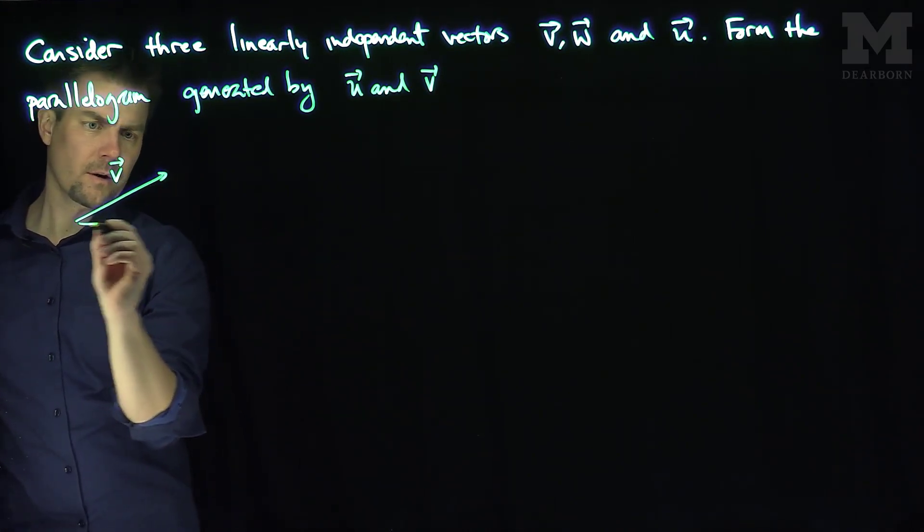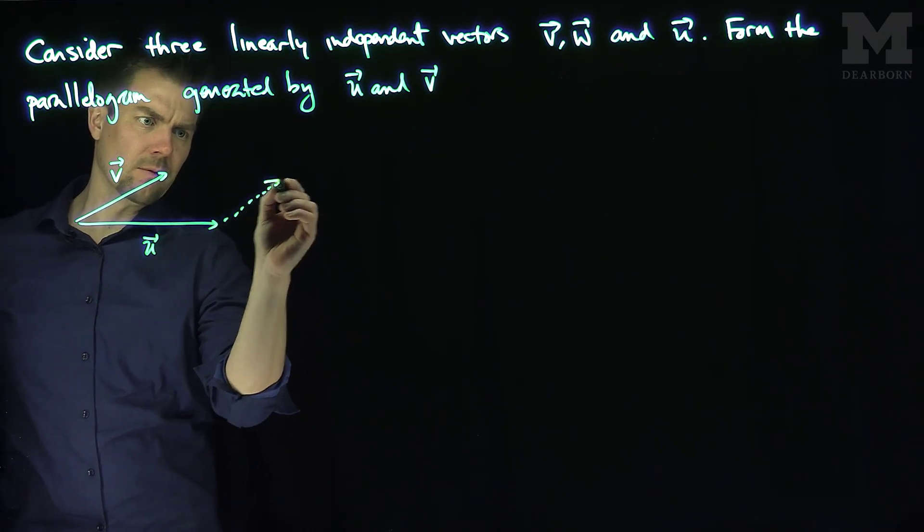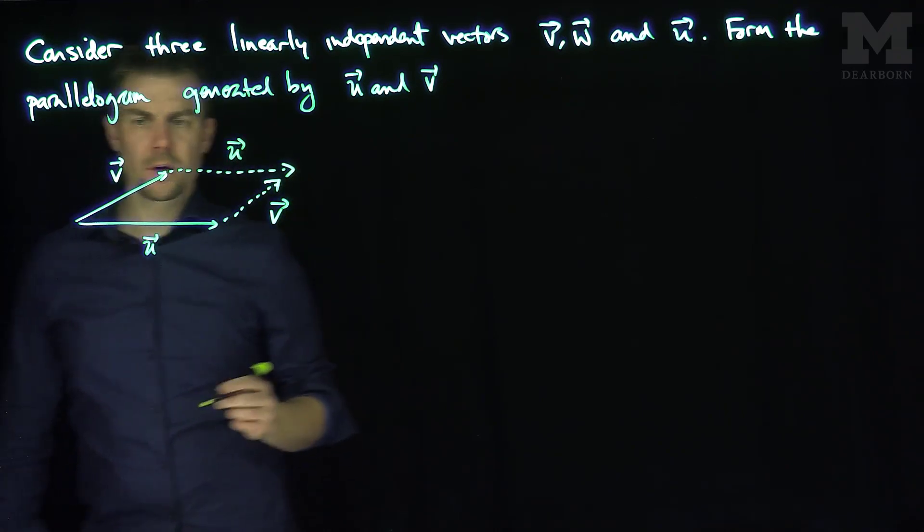There's the vector v, there's the vector u, and of course we can get a parallel copy of v over here, a parallel copy of u over here. There we go.